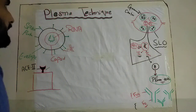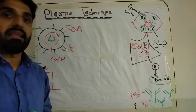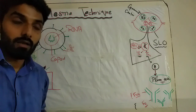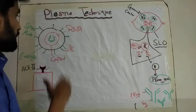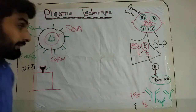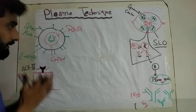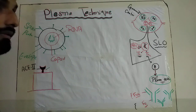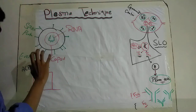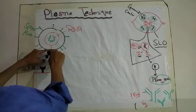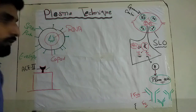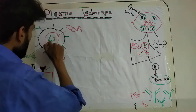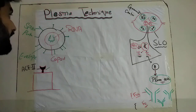Today I will explain the plasma technique, also called passive immunization, that has been used throughout the world to overcome the novel coronavirus disease. Before talking about the technique, let me briefly explain the structure of the virus. The outer coat is called the envelope protein. On the envelope protein, the green structures are called spike proteins. Inside the envelope is another protein layer called the capsid, and inside the capsid, the viral genome — RNA — is present.